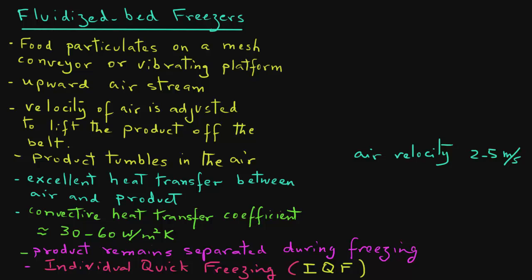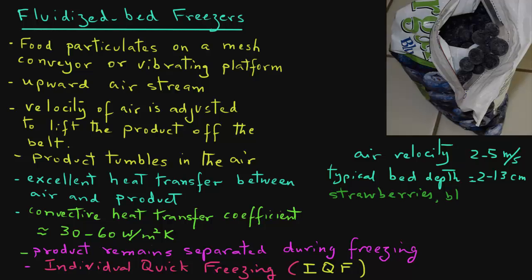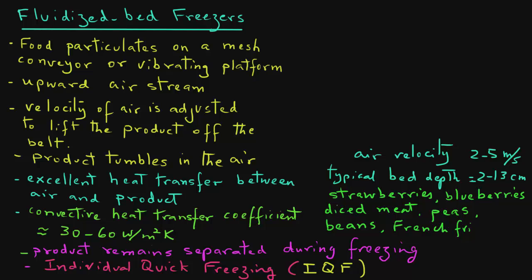A typical air velocity in a fluidized bed freezer is between 2 and 5 meters per second. A typical bed depth varies anywhere from 2 to 13 centimeters. Some of the common products that are frozen in a fluidized bed freezer are strawberries, blueberries, diced meat, peas, and beans.